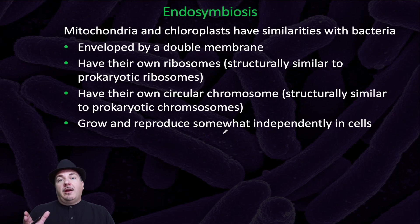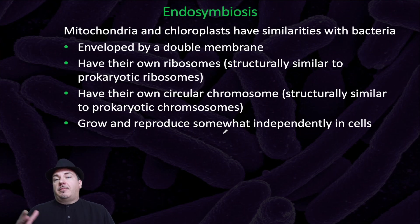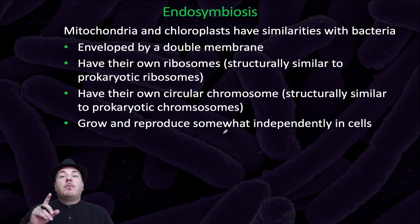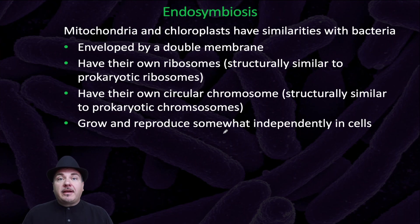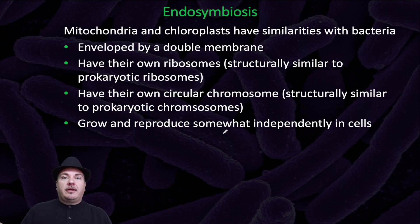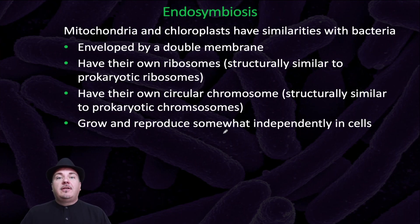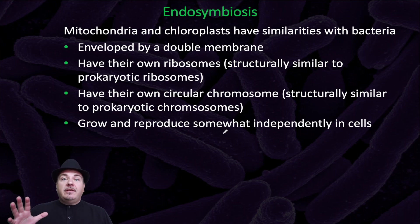More evidence: you have ribosomes floating around inside your cytoplasm and stuck on the outside of your rough ER — those are eukaryotic ribosomes. But you also have ribosomes inside your mitochondria, and those ribosomes look like prokaryotic ribosomes. Even more evidence: when do you make more organelles? You make them during cell division — except for your mitochondria. Your mitochondria divide whenever they want, because they used to be a separate living organism, a prokaryotic cell that would divide whenever it wanted. That's how we got those organelles.